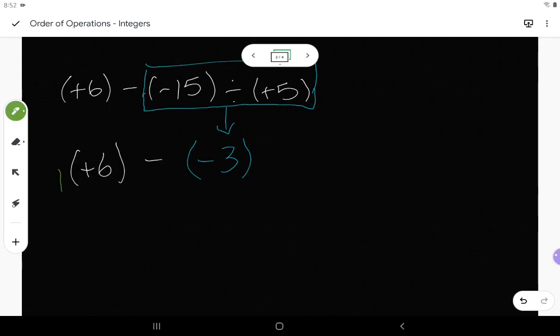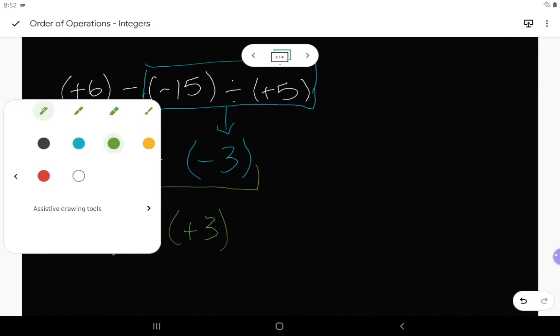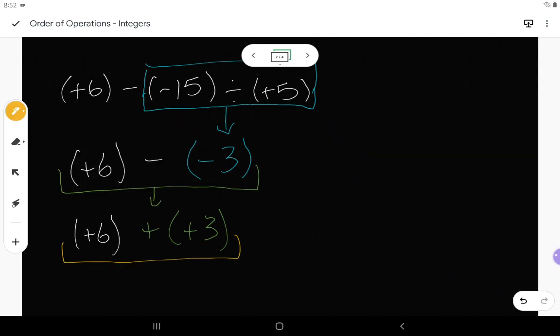My next step now would just be to do this subtraction. But I don't really want to do subtraction with integers. So I'm going to rewrite it as positive 6, the first integer stays the same. Instead of subtracting, I would like to add. And that means instead of having negative 3, I have to flip it so it becomes positive 3. And now positive 6 plus positive 3 is simply positive 9. So that's our answer to that original question. Positive 6 minus negative 15 divided by positive 5 gives us a value of positive 9.